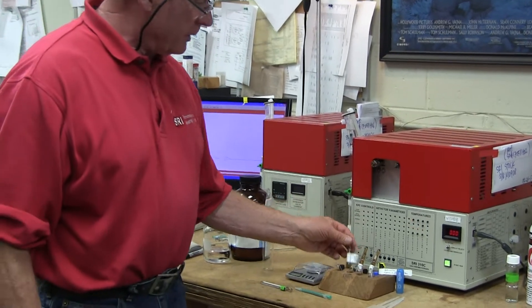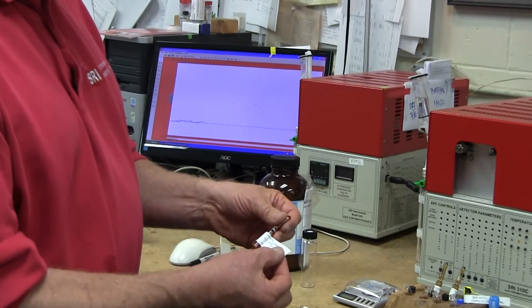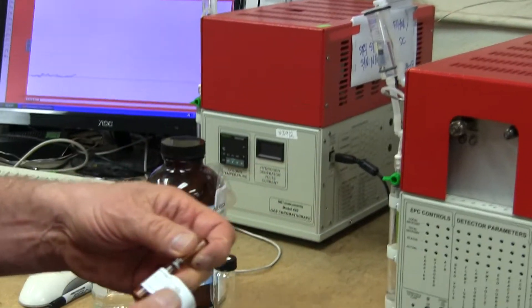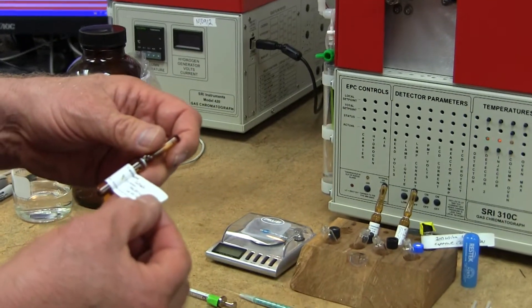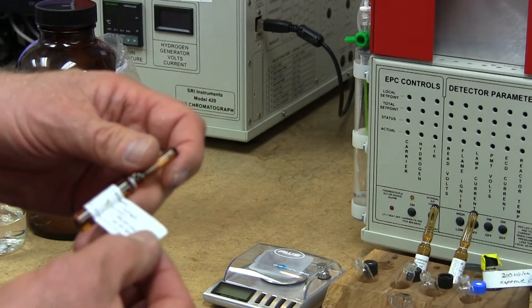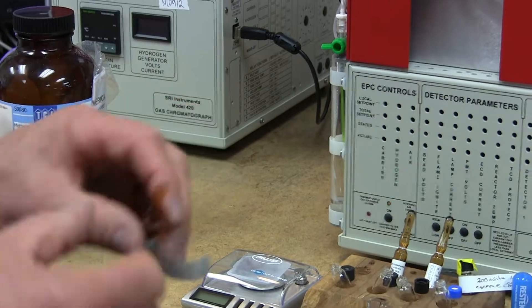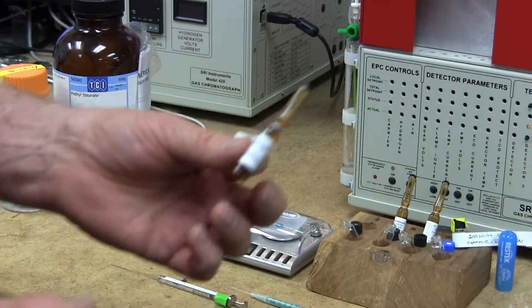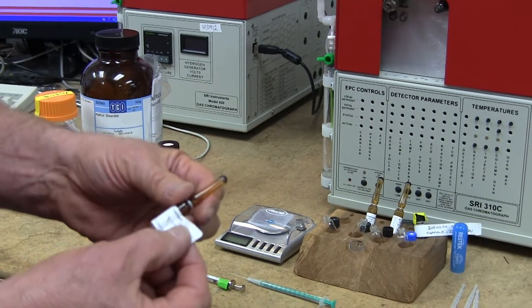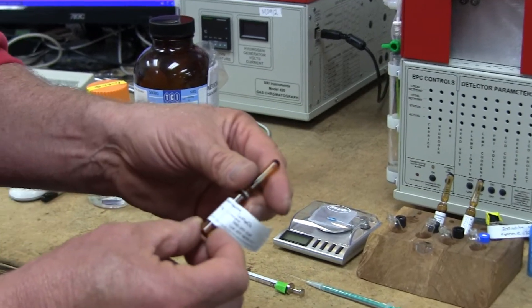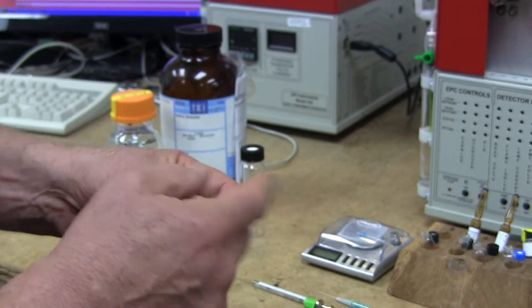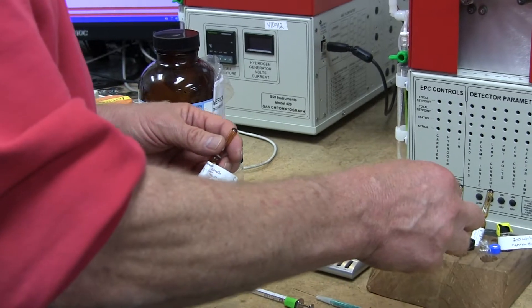So to start with, you need to purchase from one of several companies a calibration standard for CBD, THC, and CBN. So this is what they look like. They come in a little ampule like this, costs about $25, and this contains a tenth of a percent CBD and we're going to put that into a separate little bottle. These are called one and a half or sometimes two milliliter bottles.